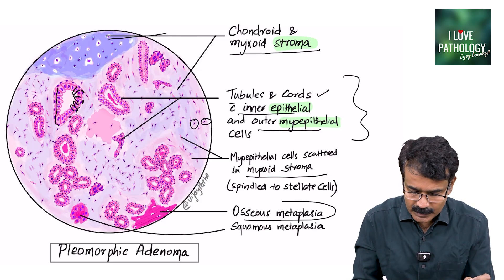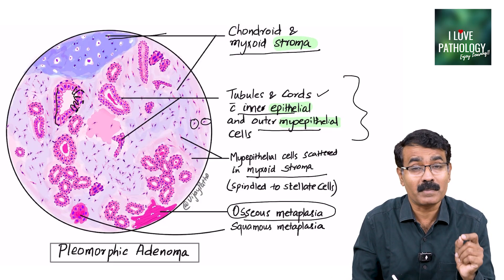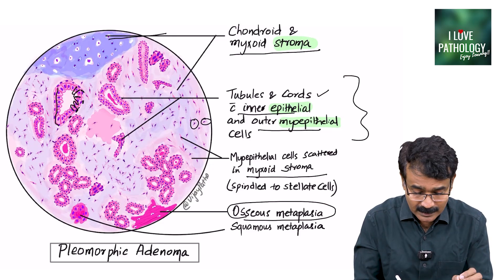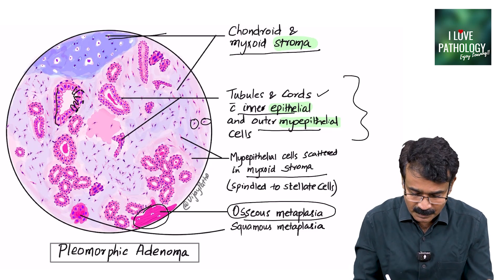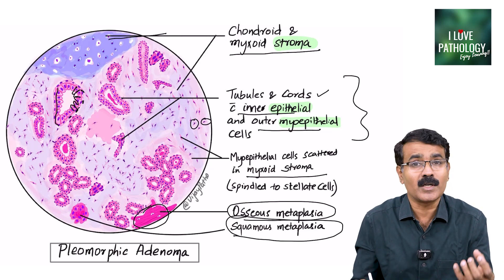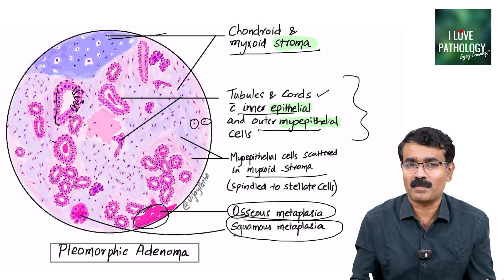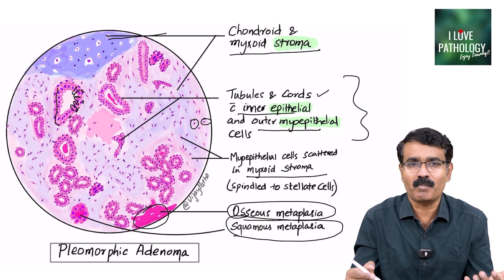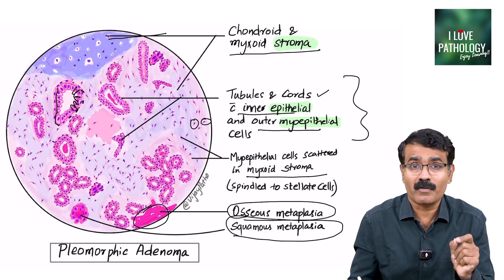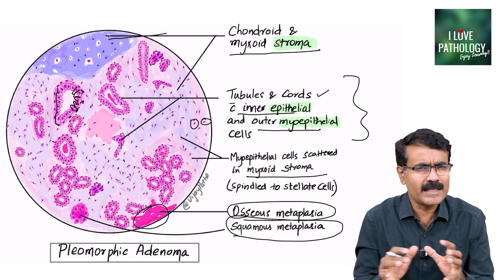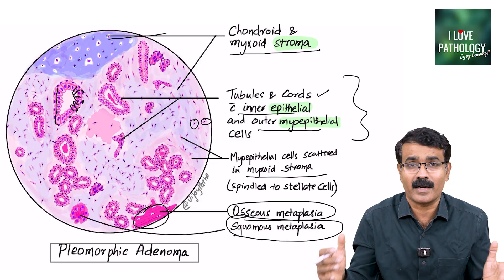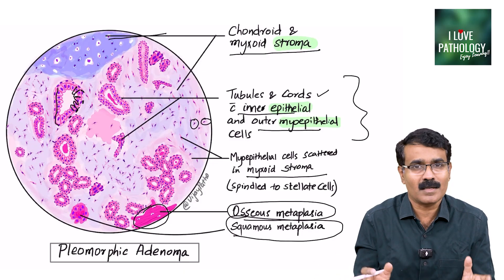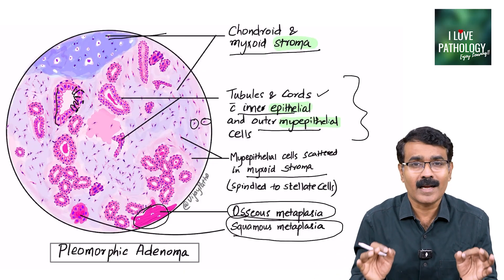Very rarely, you can find evidence of osseous metaplasia — where the stromal tissue gets converted to bone. You can also see some of the epithelial cells converted into squamous epithelium, and that's called squamous metaplasia. All these features are found in pleomorphic adenoma. Remember, pleomorphism does not equate to malignancy in this tumour — it tells you there are different kinds of architectural features. That's why it's called pleomorphic adenoma; this is a benign salivary gland neoplasm.